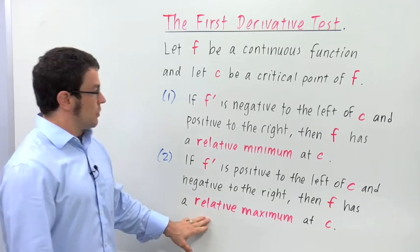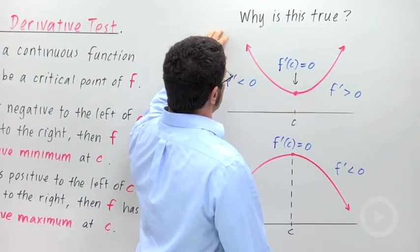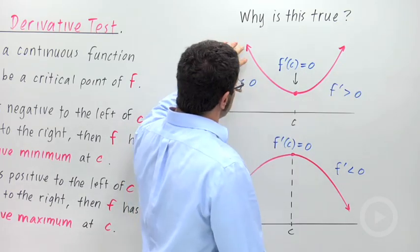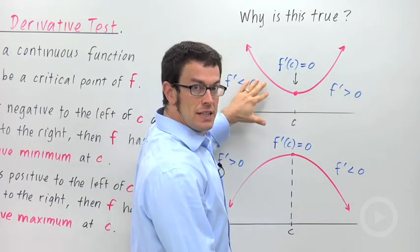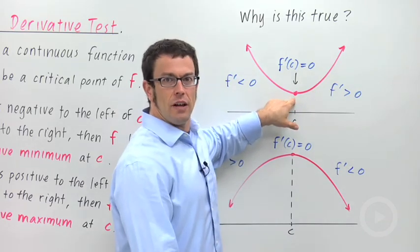Now let's see why this is true. I have drawings of this situation here. The first situation, remember, f prime was negative to the left of c and positive to the right. That means that the function f is decreasing to the left and increasing to the right. So it makes sense that you should have a relative minimum here.